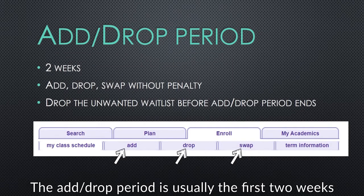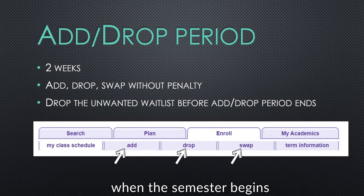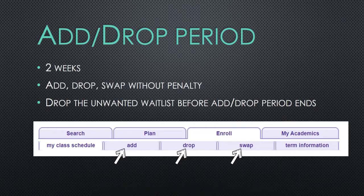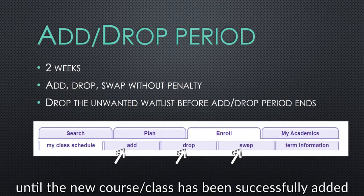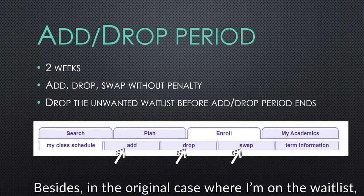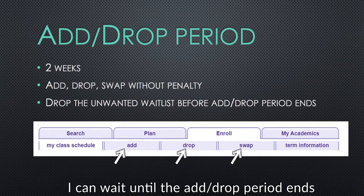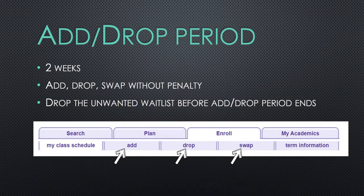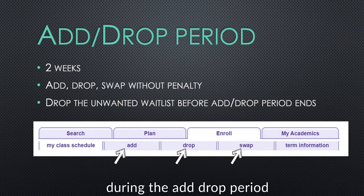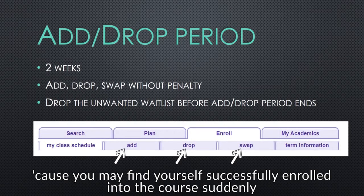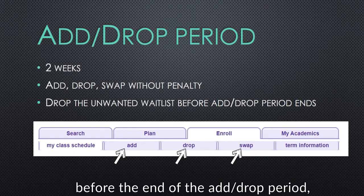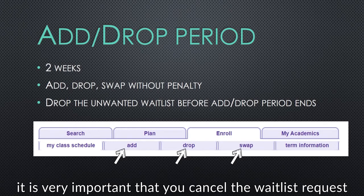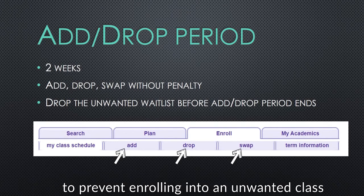Lastly, we will be talking about the add-drop period. The add-drop period is usually the first two weeks when the semester begins. During this period, we can add new courses, swap, or drop the courses that you don't want without penalty. Swap means you can change from one course or class to another — the original course will not be dropped until the new course has been successfully added. In the original case where I'm on the waitlist, I can wait until the add-drop period ends to see if I can enroll in the course. It is very important to check your schedule daily during the add-drop period, because you may find yourself successfully enrolled into the course suddenly and it may cause changes to your class schedule. As the waiting position fluctuates a lot before the end of the add-drop period, it is very important that you cancel the waitlist request before the add-drop period ends to prevent enrolling into an unwanted class.